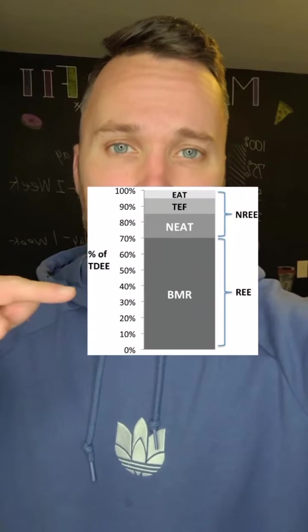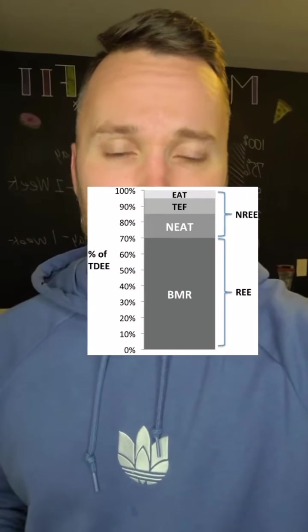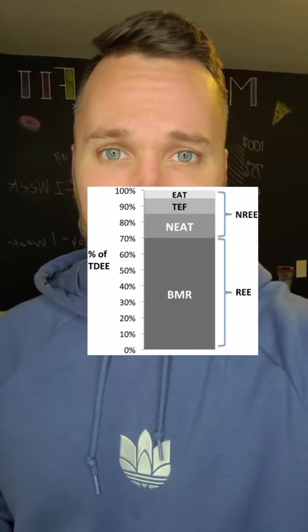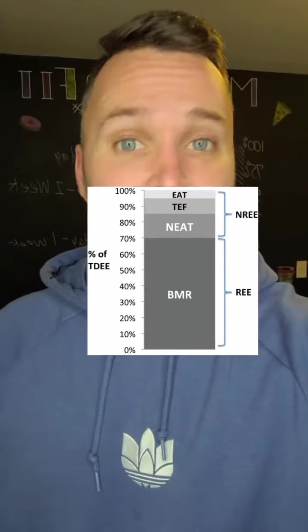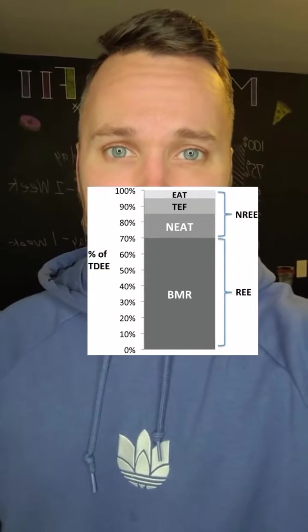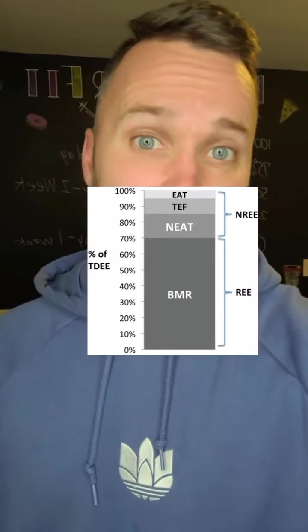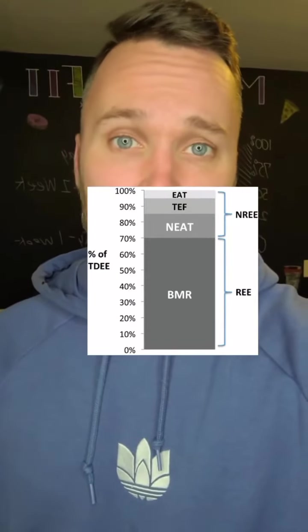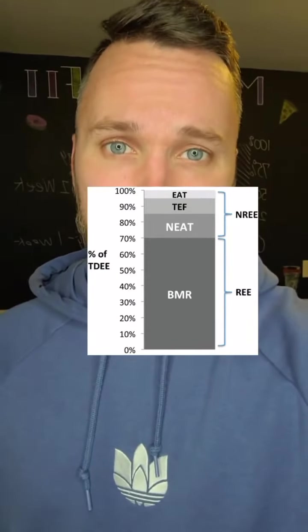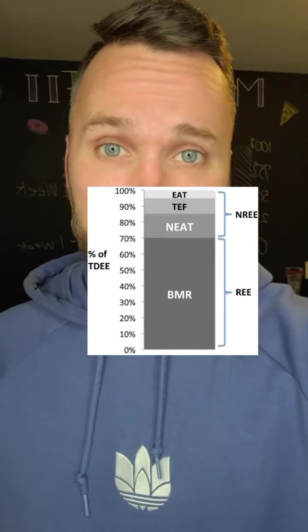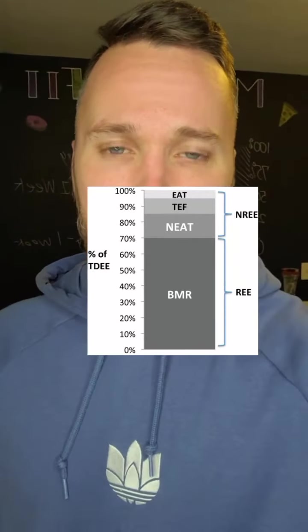For starters, we have our BMR, your basal metabolic rate. This is how many calories your body burns every day just to keep you alive. This equates for about 60 to 70% of your overall caloric burn. You don't really have any direct control over your BMR.